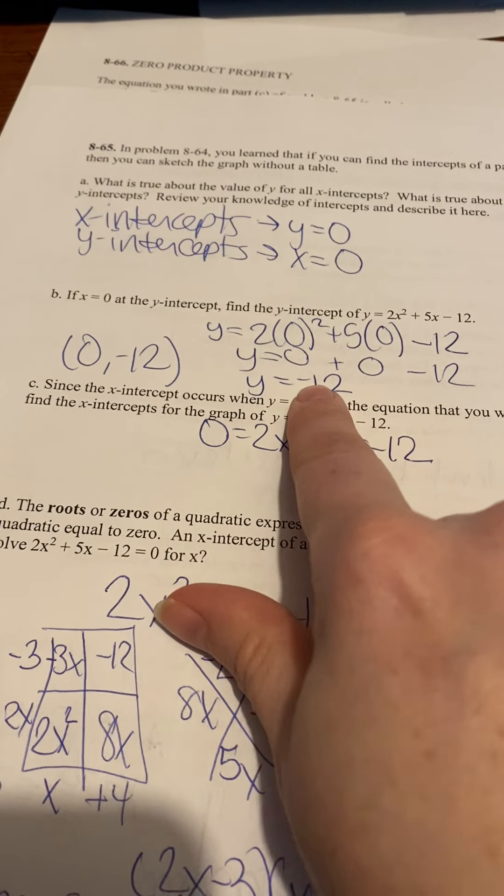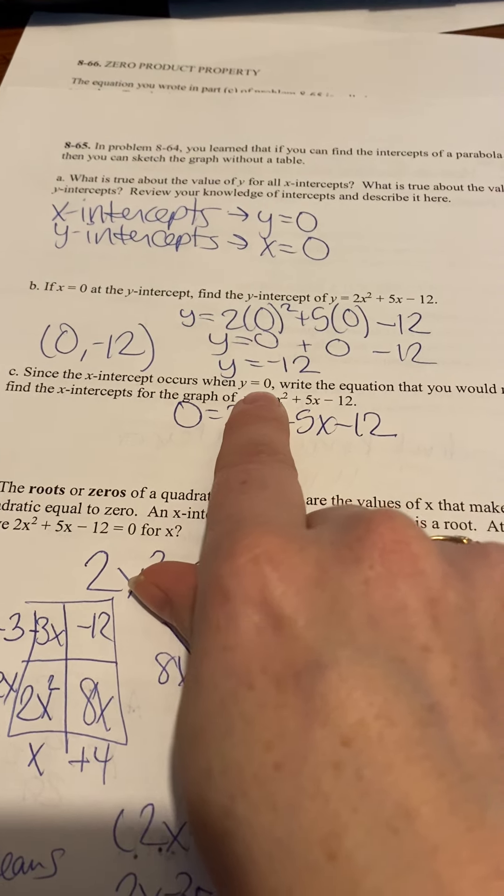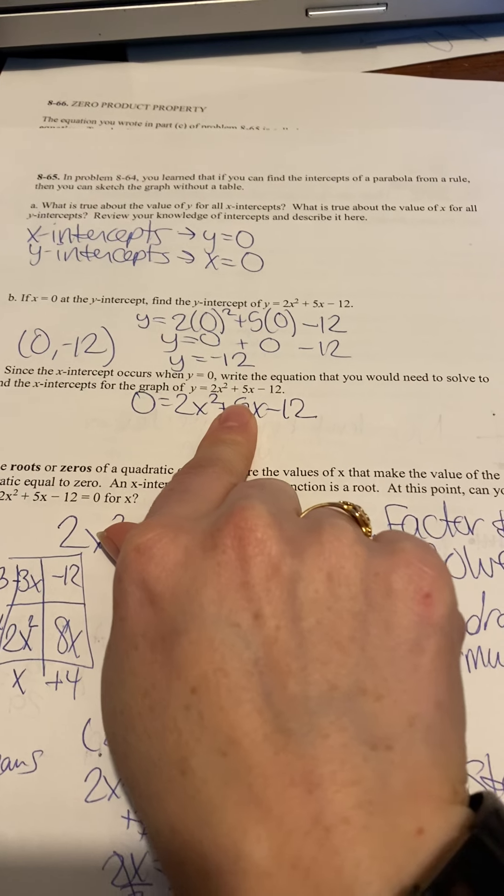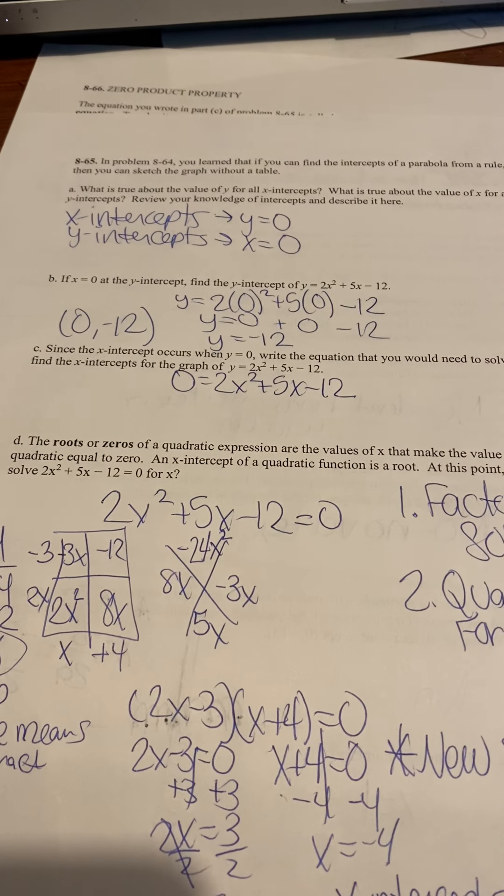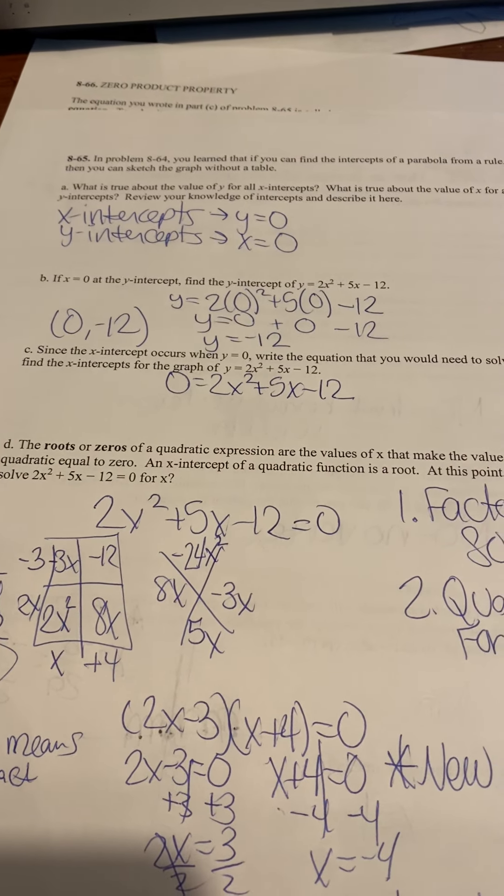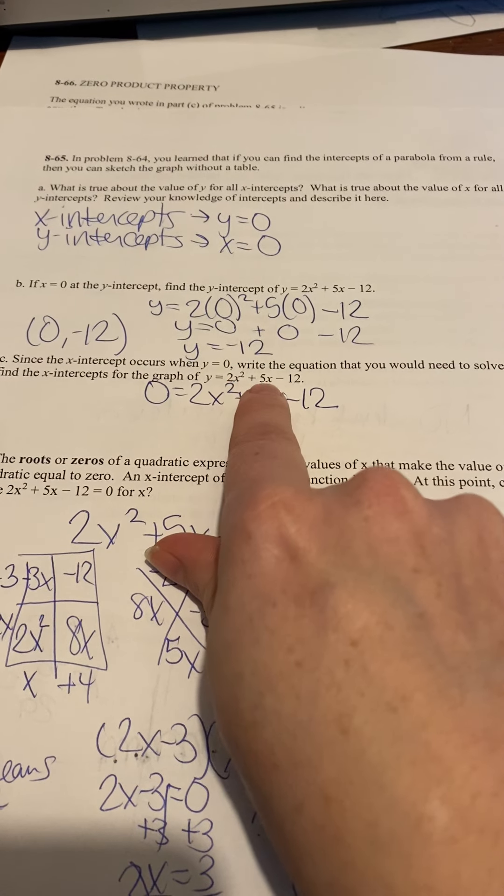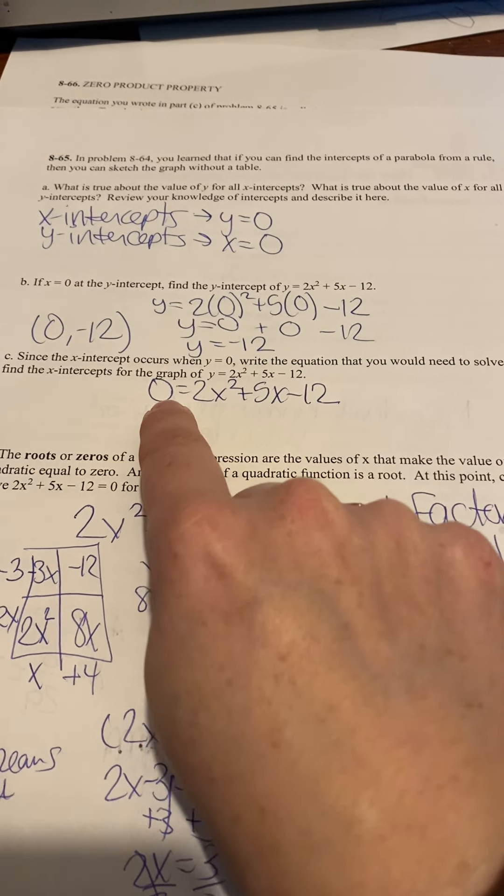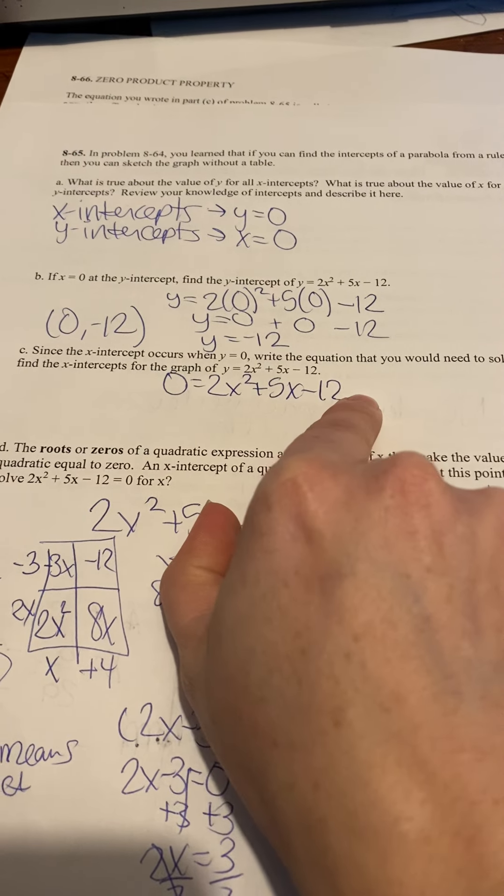A y-intercept is the easiest point to find on parabolas. Since the x-intercept occurs when y equals 0, write the equation that you would need to solve to find the x-intercept for the graph of y equals 2x squared plus 5x minus 12. It would be 0 equals that.